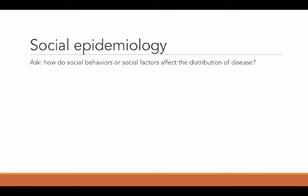What social epidemiologists do is they ask how social behaviors or social factors affect the distribution of disease. You might remember from the first lecture in this module that there was the distinction between sociology in medicine and sociology of medicine. This would be more sociology in medicine, looking at the social causes of illness.